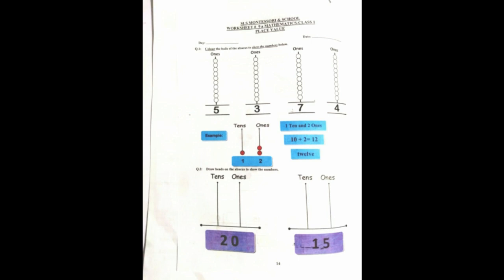First of all, write the day and date. Question 1 is: color the balls of the abacus to show the numbers below. You can see different numbers like 5, 3, 7, 4. You will color the balls — for example, for number 3 I have colored 3 balls. Color 5, 7, and 4 balls accordingly. Question 2: draw beads on the abacus to show the number. First number is 20 — 0 comes under ones and 2 comes under tens, so draw 2 beads on the tens bar and no beads on the ones side. Next number is 15 — under ones draw 5 beads, and under tens draw 1 bead.